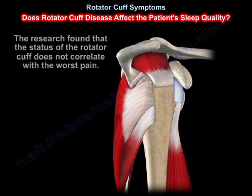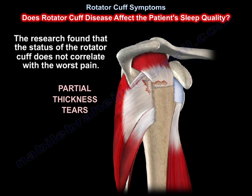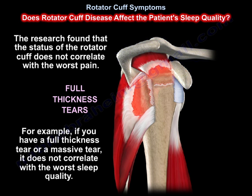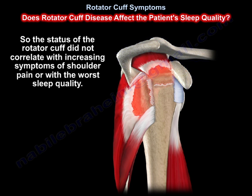Research found that the status of the rotator cuff does not correlate with the worst pain or sleep quality. For example, having a full thickness tear or a massive tear does not correlate with worse sleep quality. The status of the rotator cuff did not correlate with increasing symptoms of shoulder pain or with worse sleep quality.